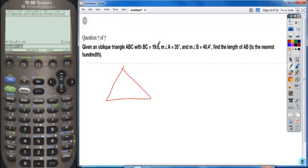In this problem, you're given a non-right triangle where angle A is 35 degrees, angle B is 40.4 degrees, and BC is 19.8.